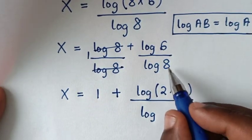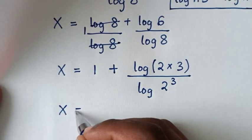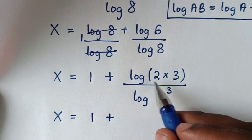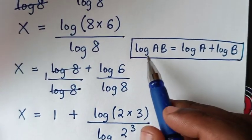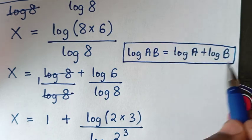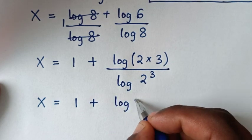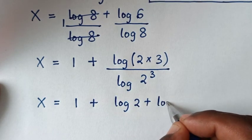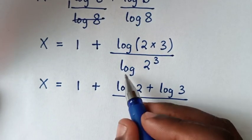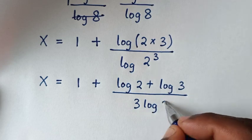So x equals 1 plus log of 6 over log of 8. Now log of 6 is log of 2 times 3, so applying the product rule it becomes log 2 plus log 3. And log of 8 is log of 2 power 3, so this power 3 moves to the front, giving 3 times log of 2.